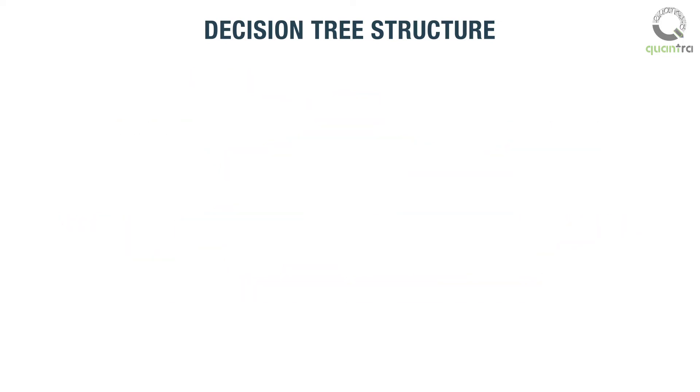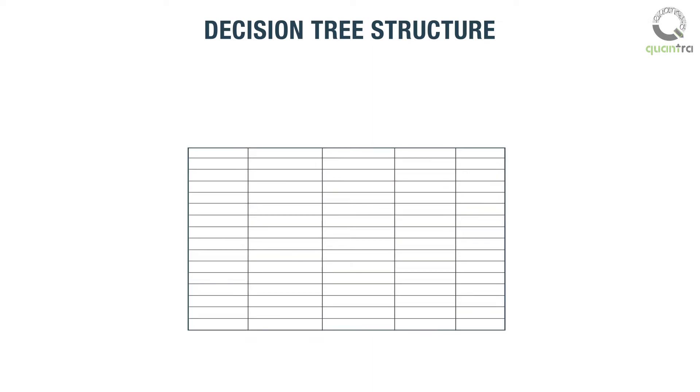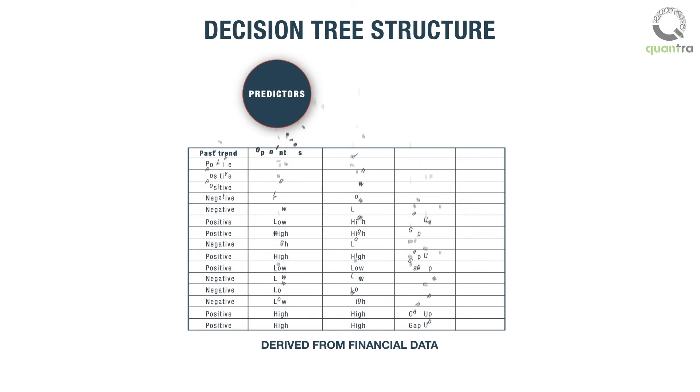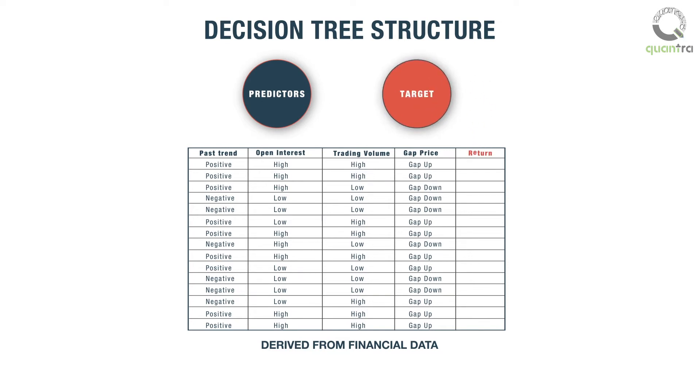Let us understand the structure of a simple decision tree. The example dataset comprises four predictors: past trend, open interest, volume, and gap price for a stock. The target variable return indicates the daily change in the stock price which can be either up or down.